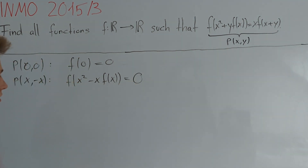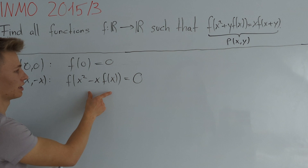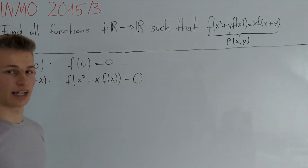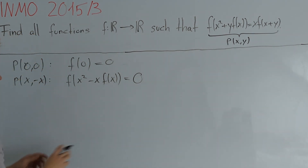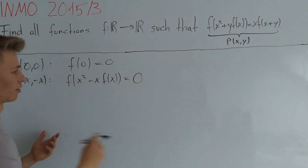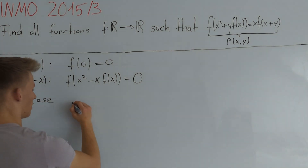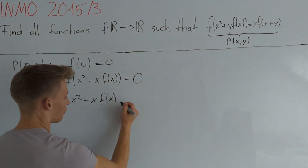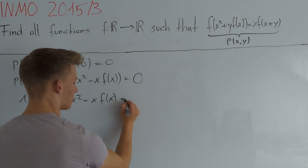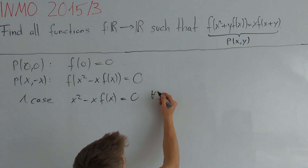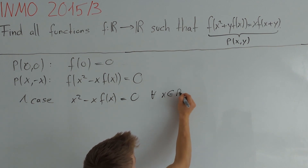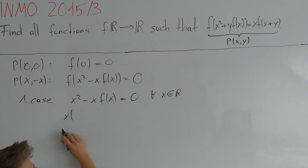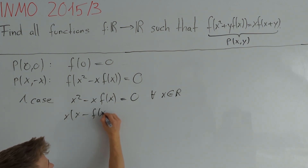This is interesting because now we found a second argument where the function also takes the value 0. This gives us two cases. In the first case, this argument is always 0, meaning x² - x·f(x) = 0 for all x in the real numbers. We can factor the left hand side as x times (x - f(x)).